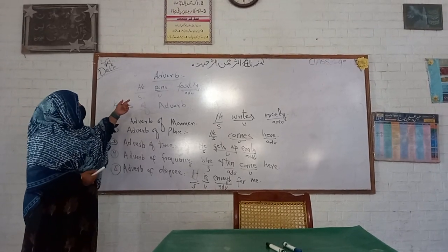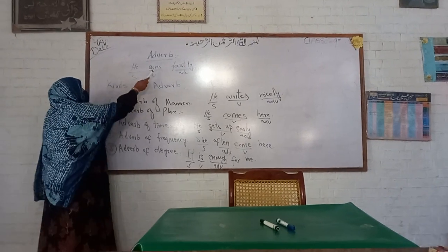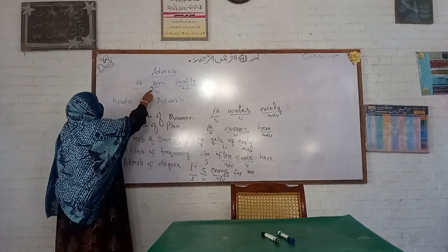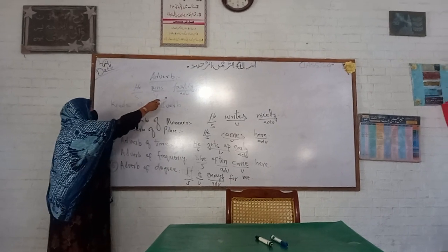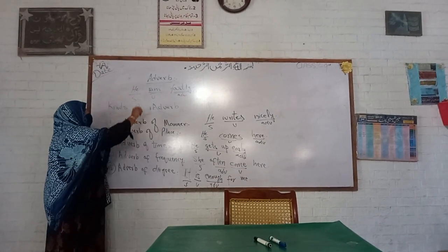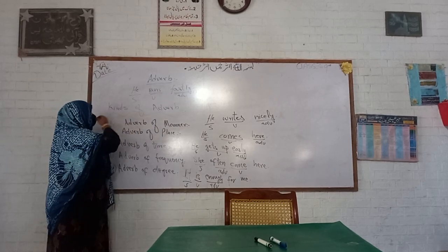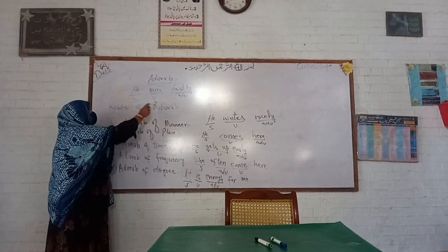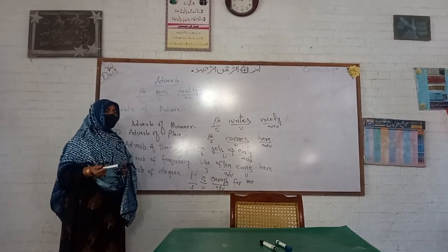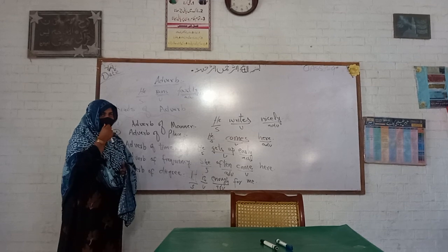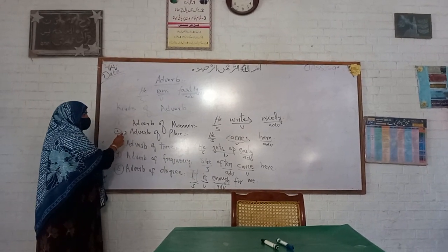Adverb, as we know, adds to the meaning of a verb. For example, here the verb is 'runs' — 'He runs fastly.' Here 'he' is the subject, 'runs' is the verb, and 'fastly' is the adverb. Usually adverbs end in -ly, but not always. Fastly tells us how he is running — it tells about how that action has been performed. We will discuss kinds of adverb as well.